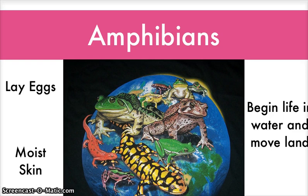Most adults live on land and breathe with lungs, but stay close to the water. Amphibians have moist skin, which helps them breathe.